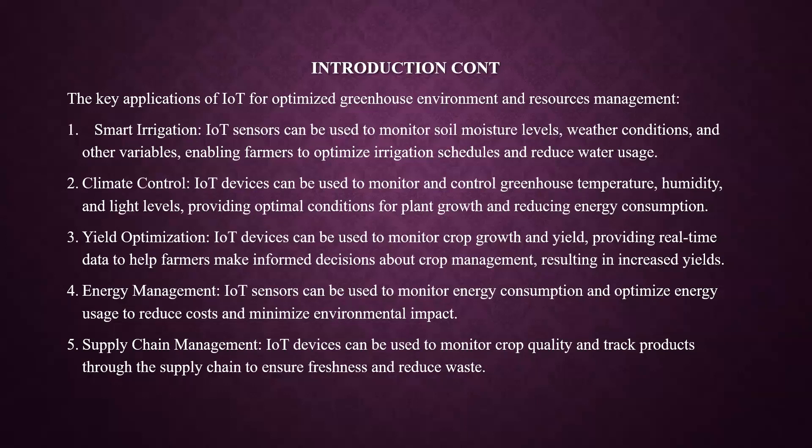An example application is IoT for optimized greenhouse environment and resources management. IoT sensors can be used to monitor soil moisture levels, weather conditions and other variables, enabling farmers to optimize irrigation schedules and reduce water usage. IoT devices can also monitor and control greenhouse temperature, humidity and light levels, providing optimal conditions for plant growth and reducing energy consumption. In yield optimization, IoT devices can monitor crop growth and yield, providing real-time data to help farmers make informed decisions about crop management, resulting in increased yields.